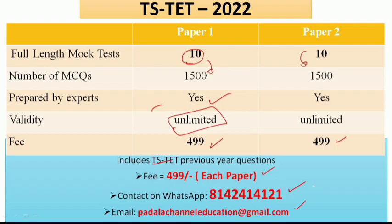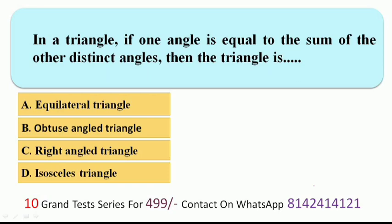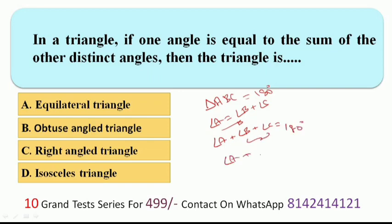Next question: in a triangle, if one angle is equal to the sum of the other two distinct angles, then the triangle is — ? In triangle ABC, angle A + angle B + angle C = 180°. If angle A = angle B + angle C, then angle A + angle A = 180°, so 2×angle A = 180°, therefore angle A = 90°. So it is a right angle triangle — that is the right answer.